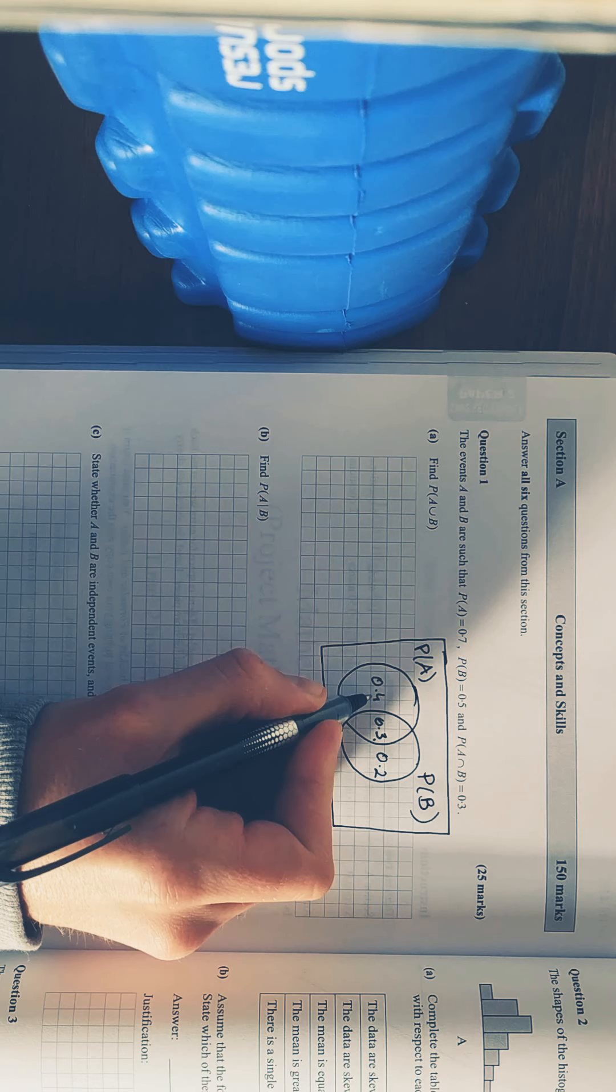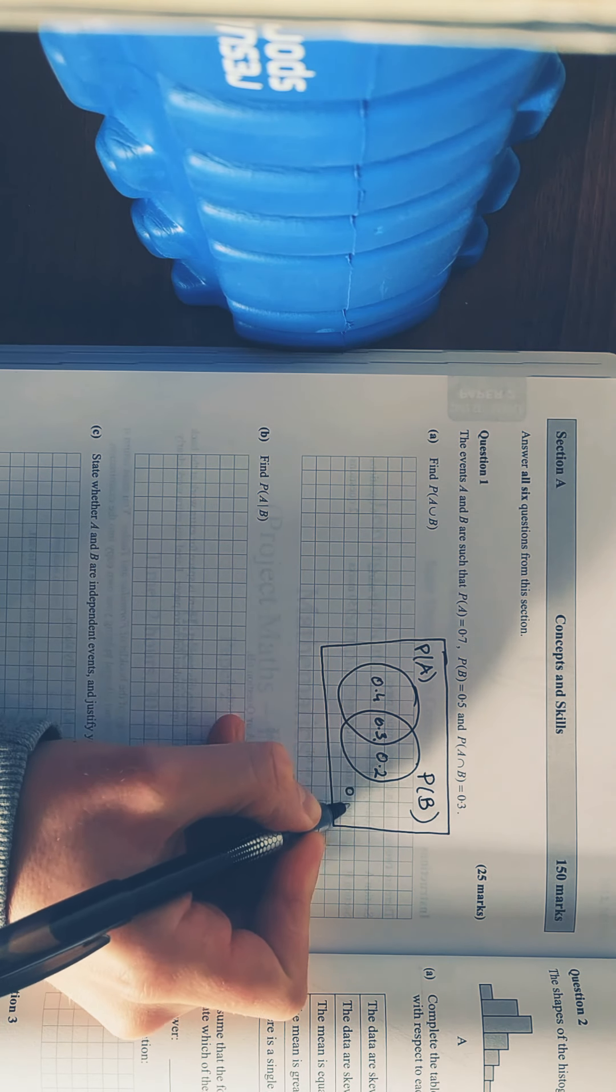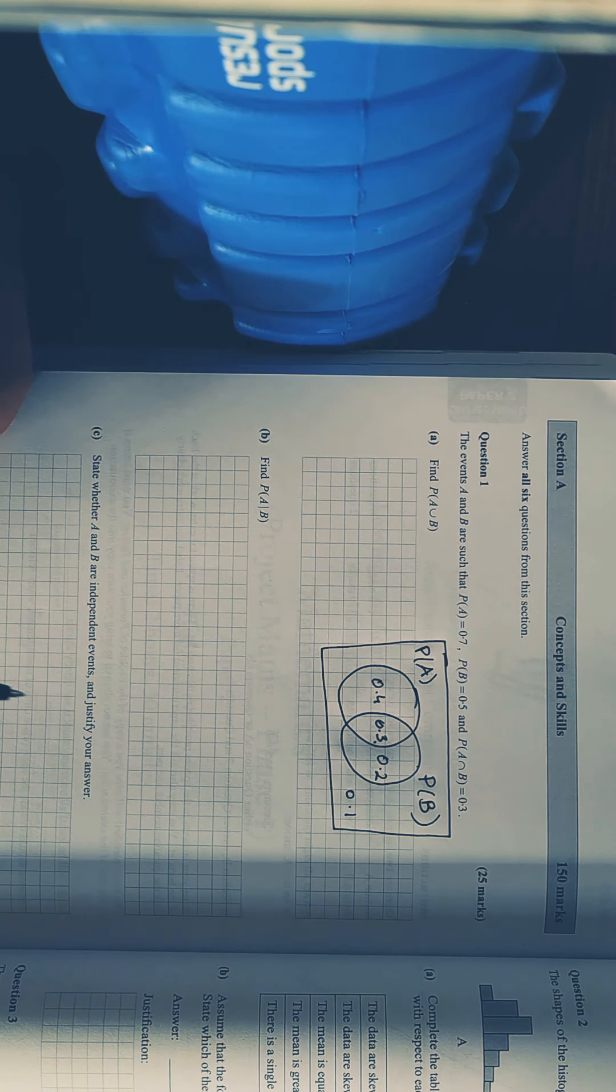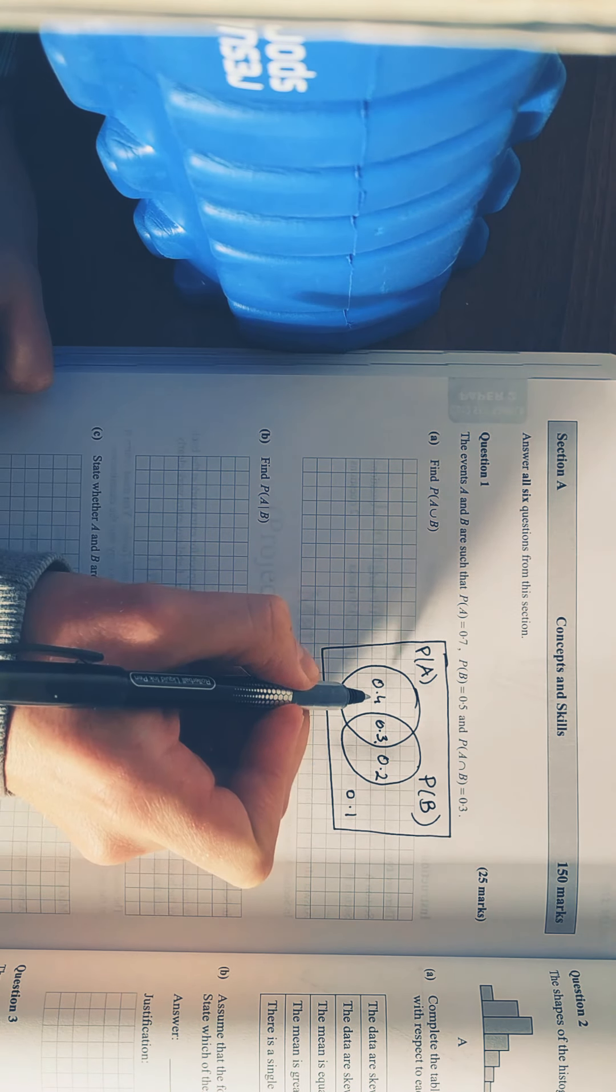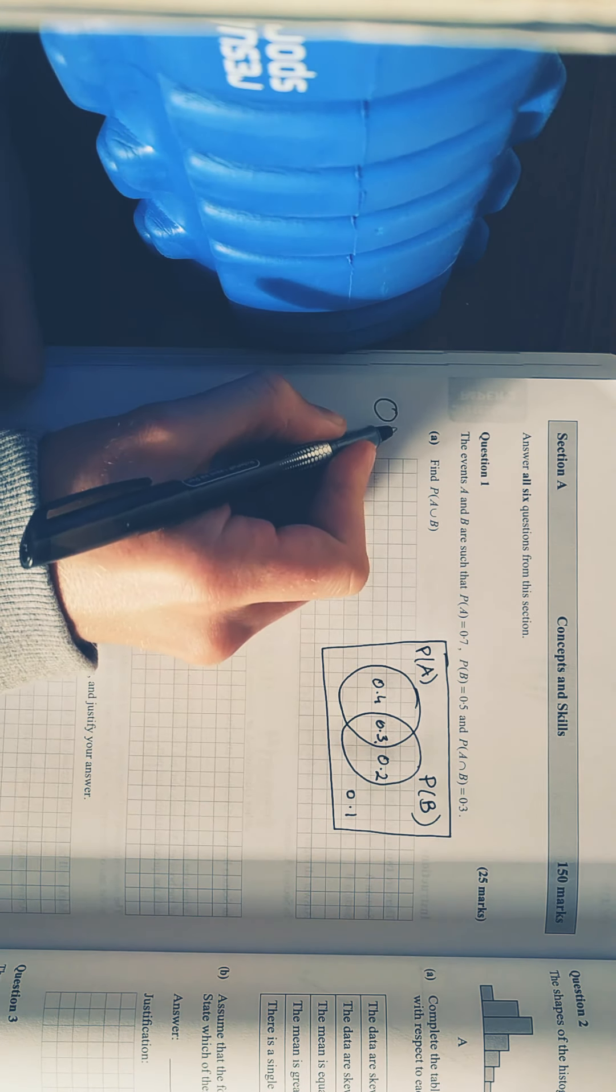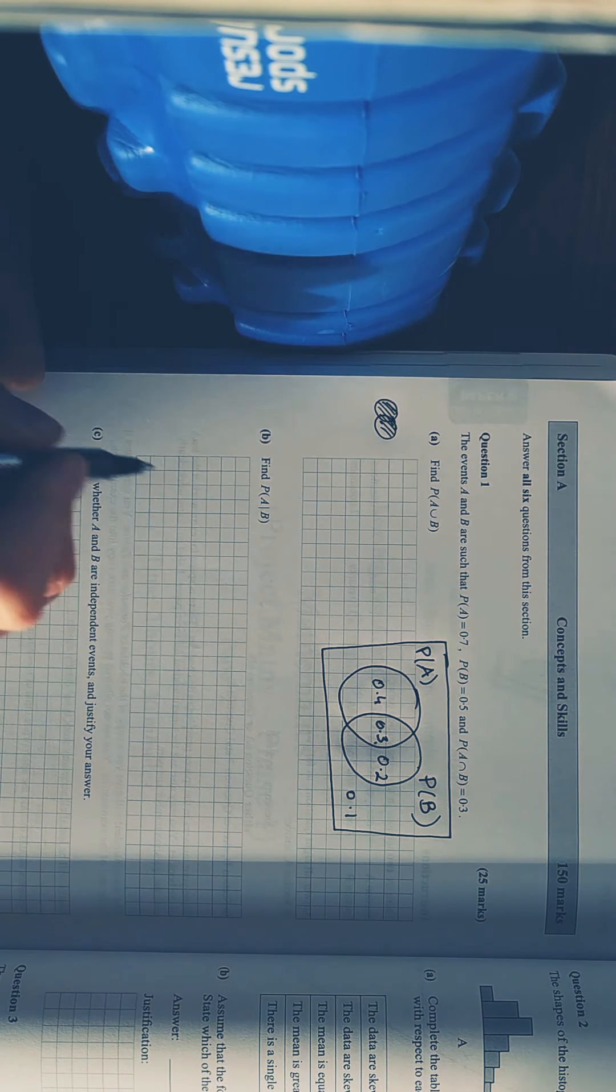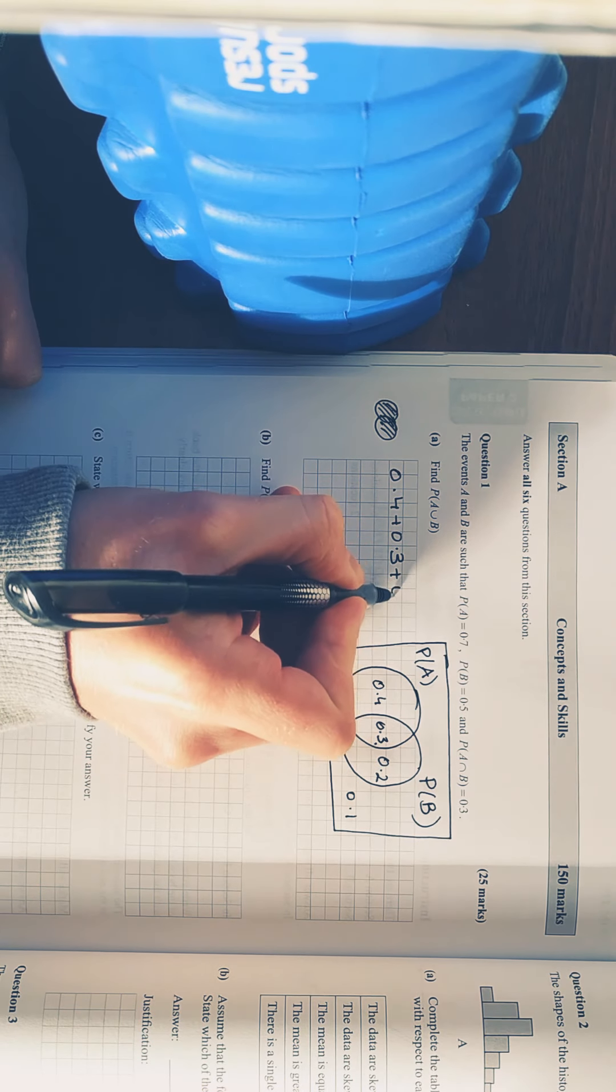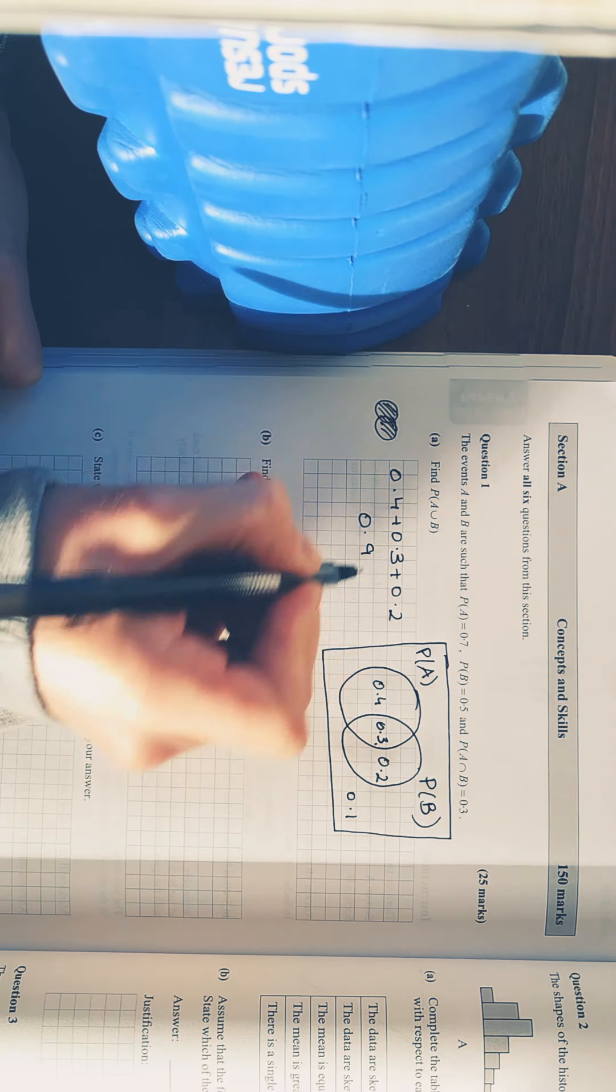And in B it must be 0.2. You can tally those up, 4, 3, 7, and outside must be 0.1. Because remember, probability all adds up to 1. So, find the probability of A union B. A union B is just the two circles united. So just add up those probabilities, and you get 0.9.